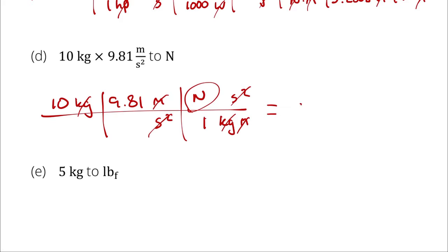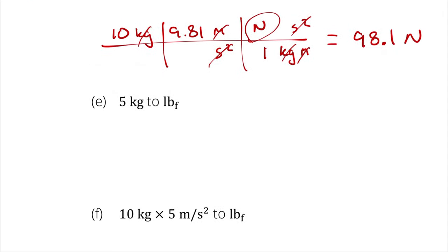Part E: we are converting kilograms to pounds of force. The issue with this conversion is that kilograms is a representation of mass and pounds of force is a representation of force. In order to perform this conversion, I need dimensional homogeneity — meaning they need to be in the same dimension for unit conversion to even make sense. There is an implicit assumption to be made: I need to assume that this 5 kilograms is experiencing an acceleration, and since I have nothing else to work on, I'm going to assume it's under standard gravitational acceleration — standard sea level Earth gravity, about 9.81 meters per second squared.